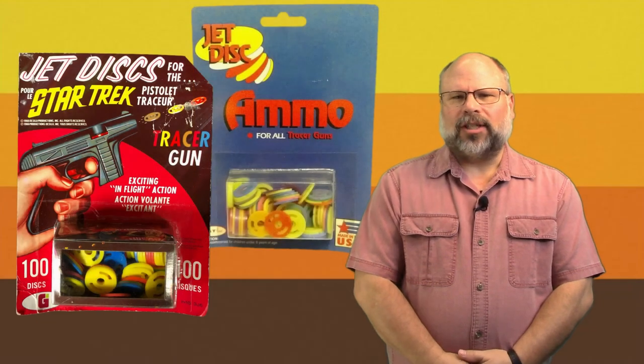They were packaged in blister-packed cards and came with 20 or 30 of the penny-sized discs that they used for ammo. The discs themselves were made of various colors of plastic and had a central hole with slots around the circumference and were about the size of a penny. They could be used over and over, that is, until you lost them all, but luckily, you could purchase additional jet discs which were also sold separately from the guns.